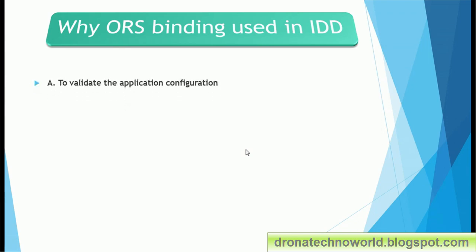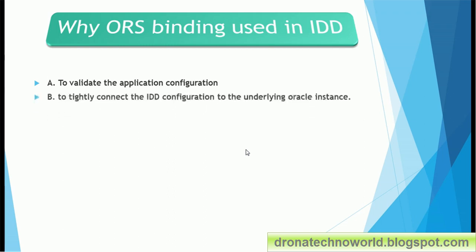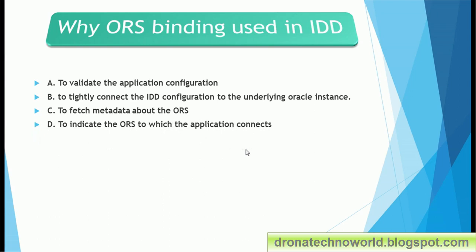Next question: why is ORS binding used in IDD? This will give you more information beyond just the quiz. The options are: option A, to validate the IDD application configuration; option B, to tightly connect the IDD configuration to the underlying Oracle instance; option C, to fetch metadata about ORS; option D, to indicate the ORS to which the application connects.